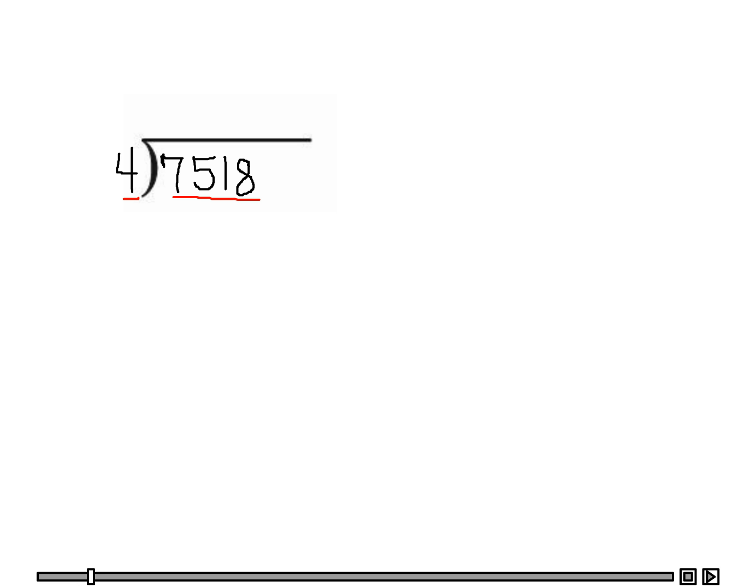So first, let's look and see if we can divide four into seven. Yes, we can. So I'd like to ask the question. Let me put a multiplication symbol here. Four times what equals seven without going over? And I can say one. Let me just change the color. One. Four times one is four. So the next thing I need to do is subtract. I'm going to say seven minus four is three.